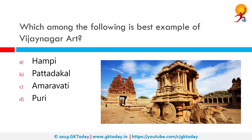Which among the following is the best example of Vijayanagar art? The correct answer is Hampi. Hampi is built according to Vijayanagar architecture of the 1336 to 1565 CE period, a notable building idiom that developed during the rule of the Imperial Hindu Vijayanagar Empire. It is characterized by a return to the simplistic and serene art of the past.